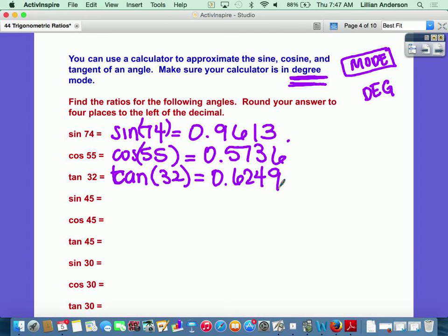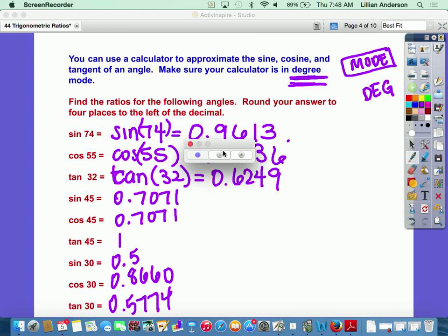Pause this video, do it for the rest of these. Did you get these values? I hope so. Now if you've got radicals instead, that means that you need to be on classic.